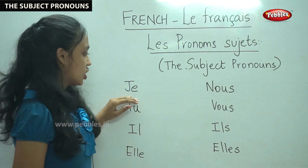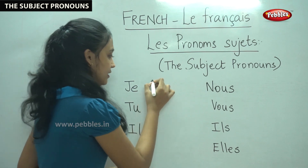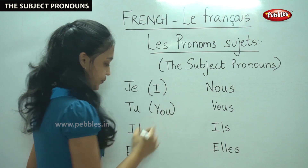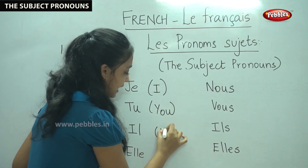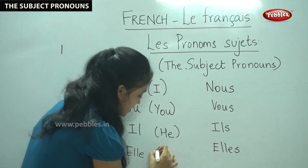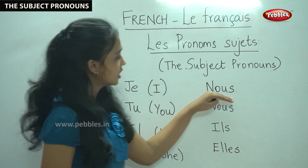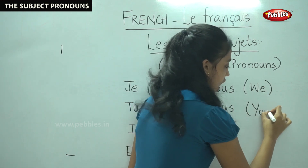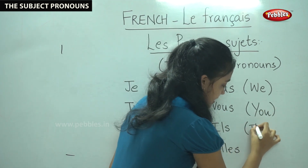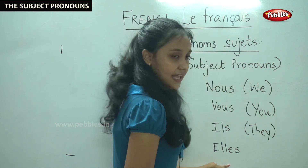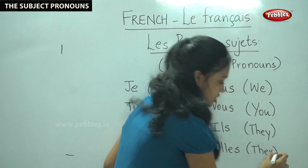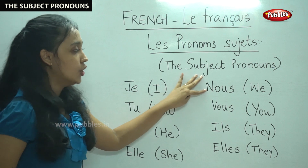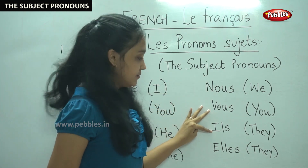So once again, say it along with me. Je means I. Tu means you. Il means he. Elle means she. Nous means we. Vous also means you. Ils means they. Elles also means they. Say it with me once again: Je, Tu, Il, Elle, Nous, Vous, Ils, Elles.